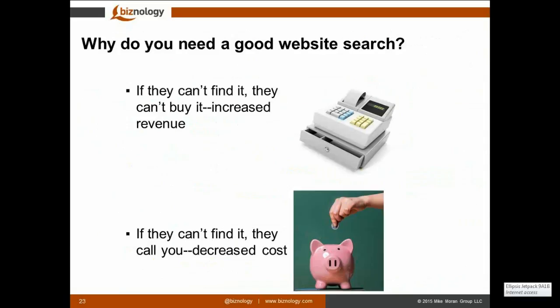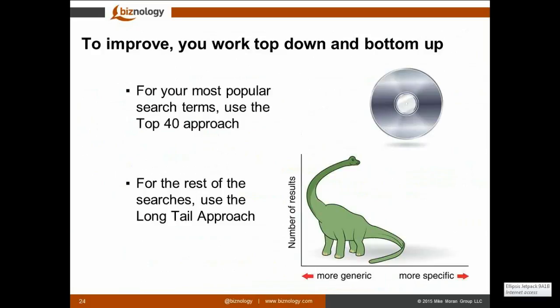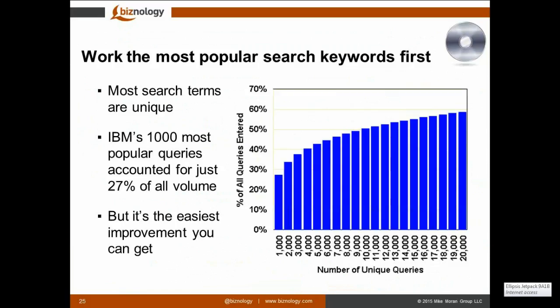Why do you need good website search? Two reasons: if they can't find it, they can't buy it — meaning you're losing revenue — or if they can't find it, they're calling you, meaning your costs are going higher. There are two approaches to improvement: the 'top 40' approach, where you work on the most popular keywords first, and the 'long tail' approach, which makes improvements that cut across your entire site.